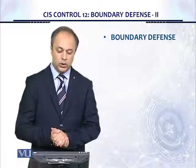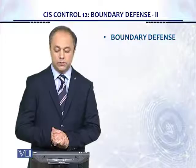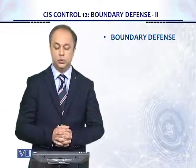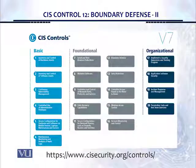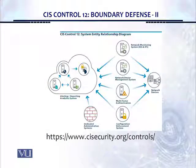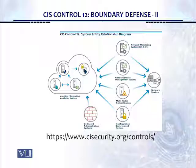Welcome. In this module we're going to take a look at CIS Control 12 Boundary Defense, or Edge Perimeter Device Defense Part 2. These are the CIS controls — the overall dashboard for version 7. This is the system entity relationship diagram which we already discussed in the last module. As you can see, there are different mechanisms like network monitoring system, IDS/IPS, network device management system, multi-factor authentication, and configuration enforcement system, which we should use to manage these edge devices.